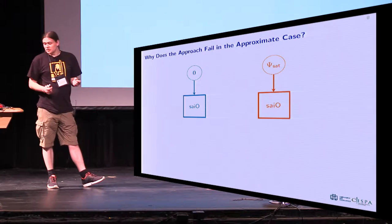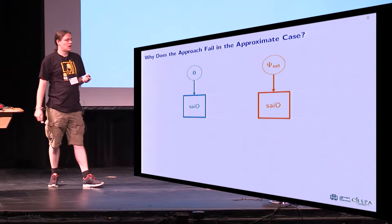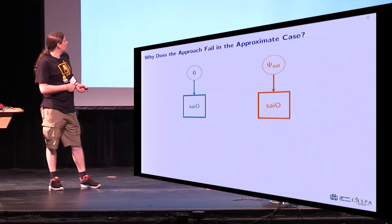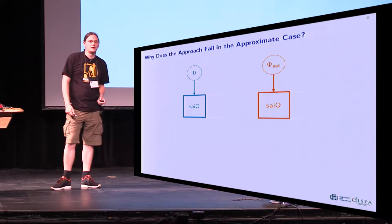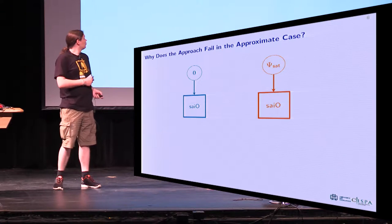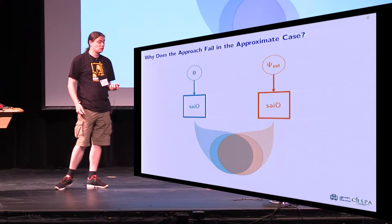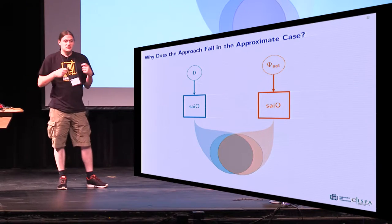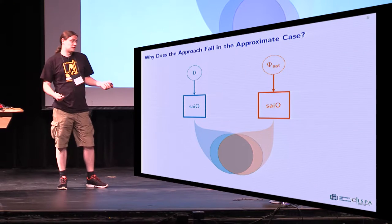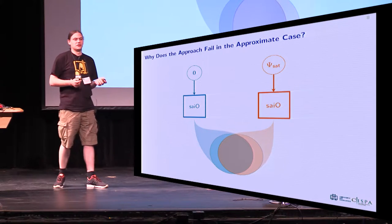The next obvious question is: can we just use exactly the same approach in the approximate case? The answer is no. To see why, consider that we have a satisfiable formula that has very few satisfying assignments — say, only a single satisfying assignment. Then it actually disagrees with a zero circuit only on a single point. Because we only have an approximate obfuscator, the obfuscator can just ignore that point, obfuscate this satisfiable formula to a zero circuit, and therefore we no longer have the guarantee that there will be a large statistical distance.